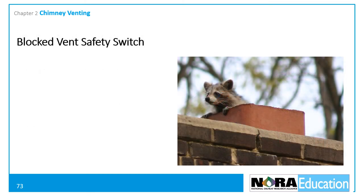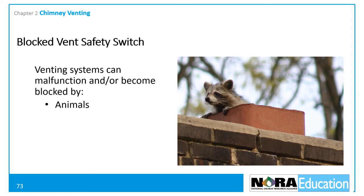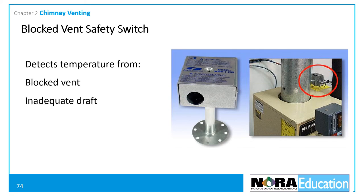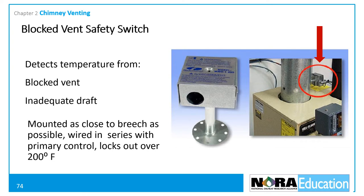This section addresses blocked vent safety switches. Venting systems can malfunction or become blocked — animals sometimes enter the system, soot can accumulate, and chimney liners can deteriorate. When the vent system malfunctions, flue gases including carbon monoxide can enter the building. Thermal safety switches detect a temperature rise above a set point caused by a blocked vent, indicating inadequate draft. These manual devices lock out when they sense a temperature above 200 degrees Fahrenheit. They are mounted as close to the appliance breach as possible and wired in series with the primary control to prevent burner operation when there is a blocked vent.